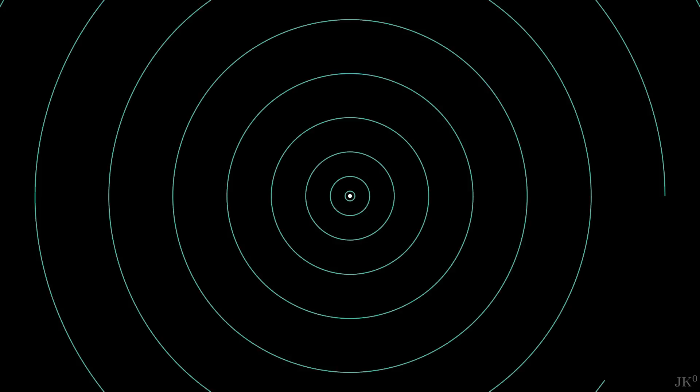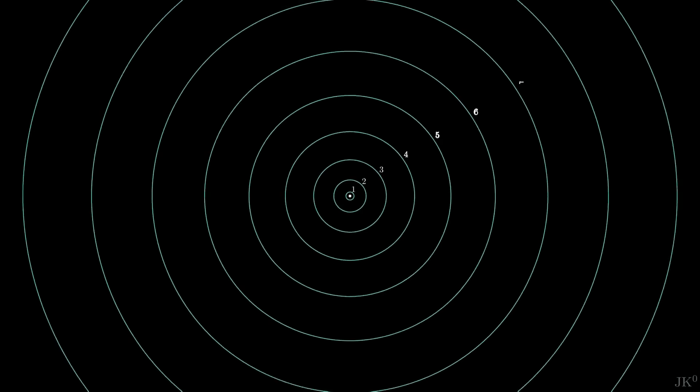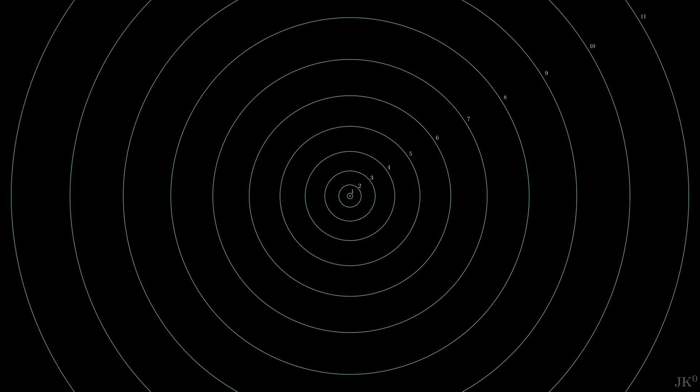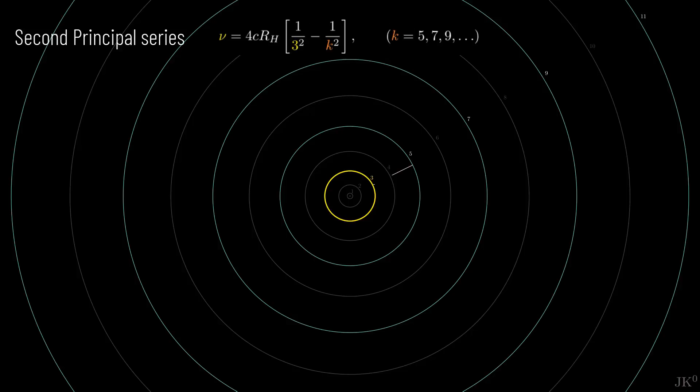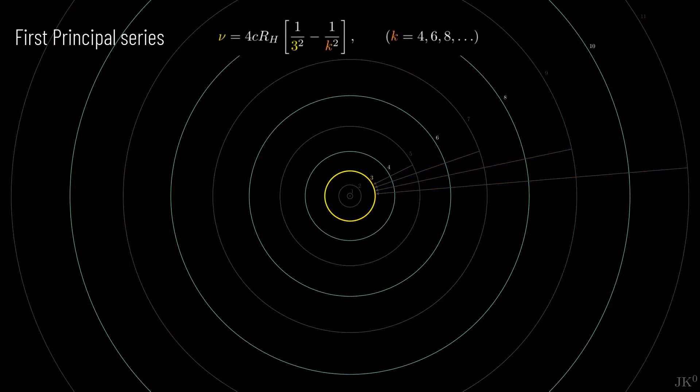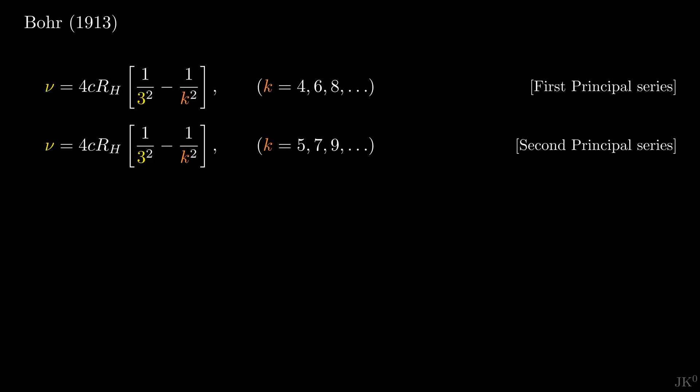Imagine that these are the energy levels of a single electron in ionized helium. Highlighting the final state n1 equals 3, Bohr tells us that what Fowler called the second principal series correspond to transitions from odd levels down to the third level, whereas the first principal series correspond to transitions from even levels down to the third level.